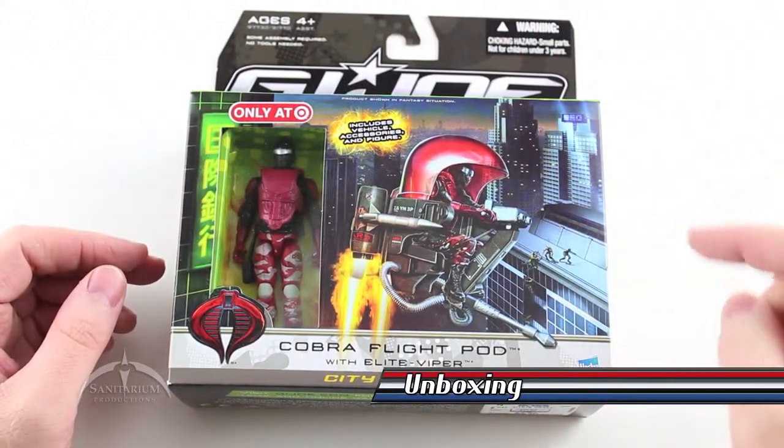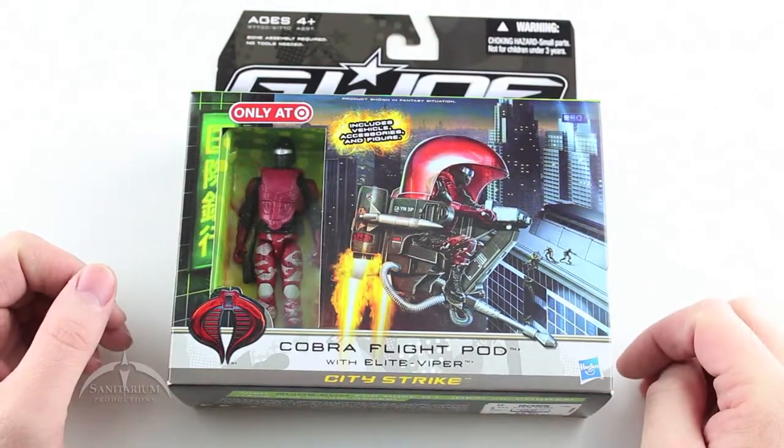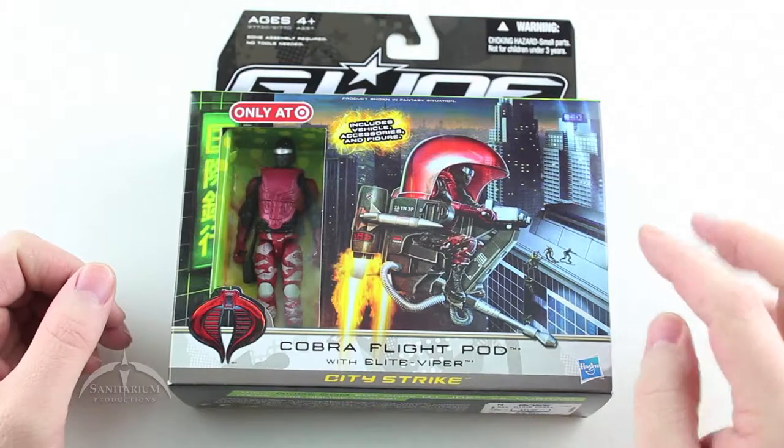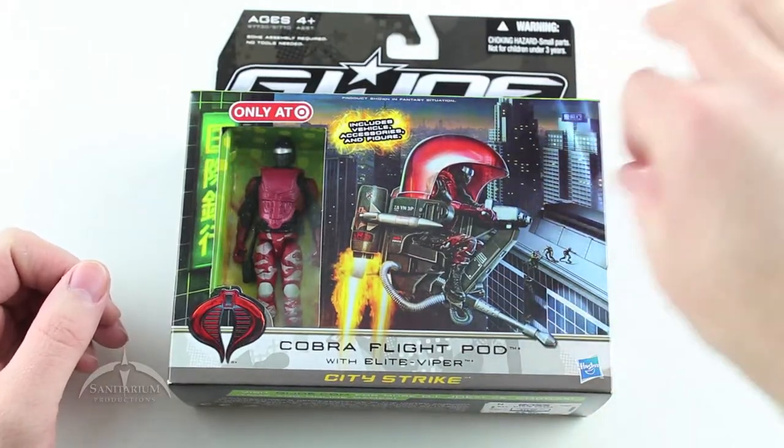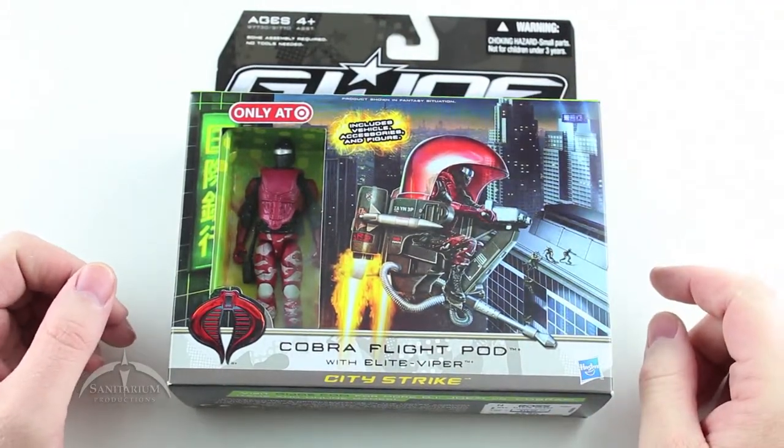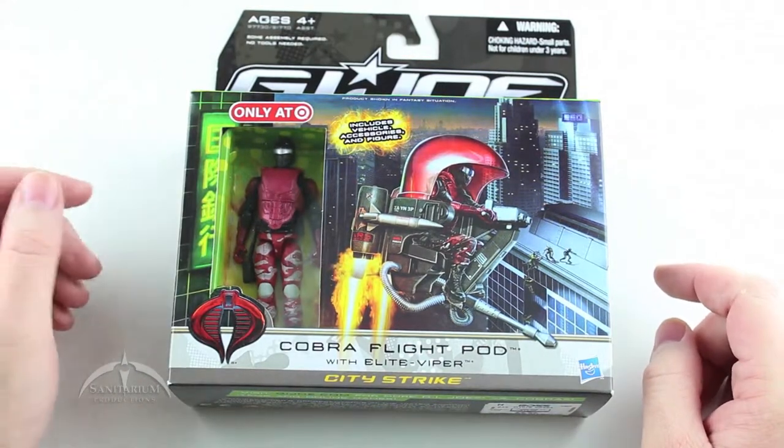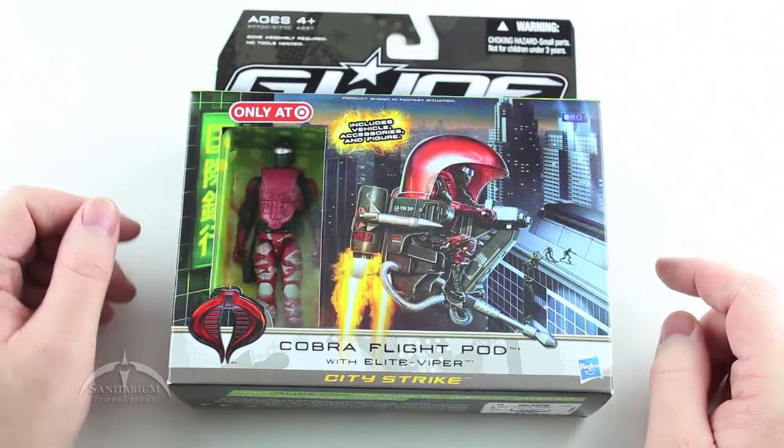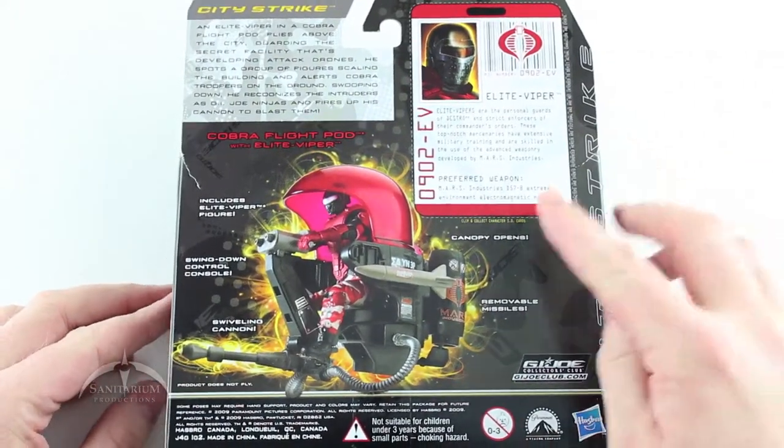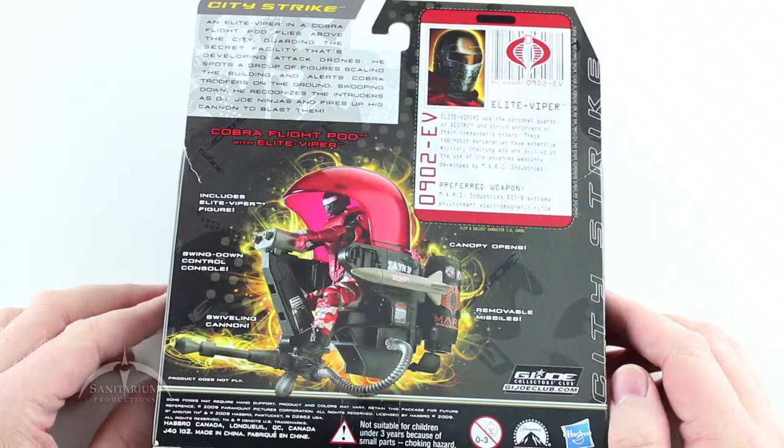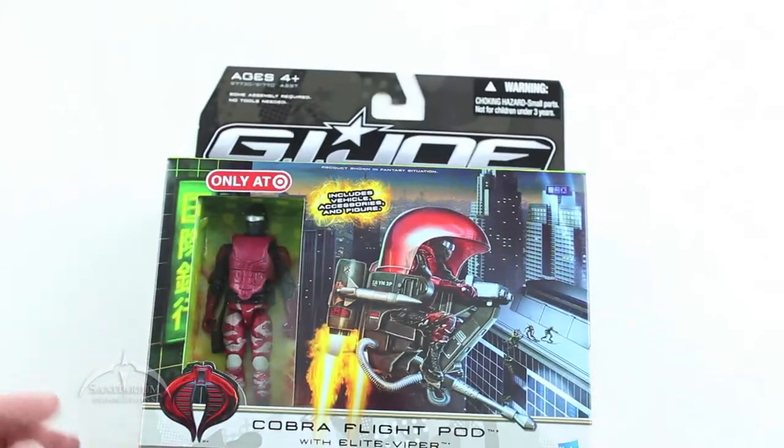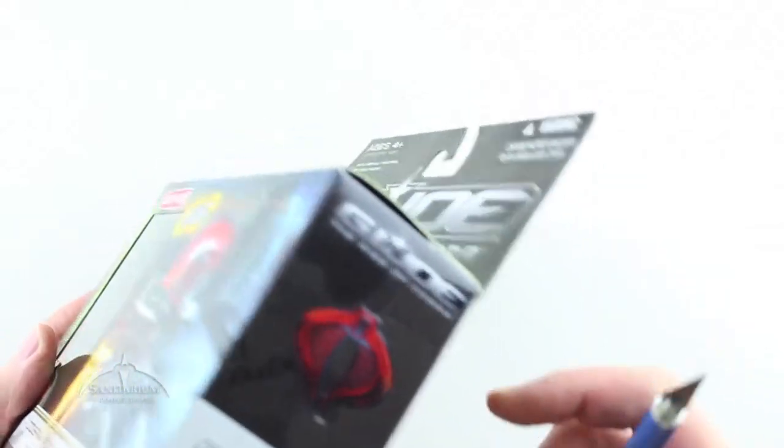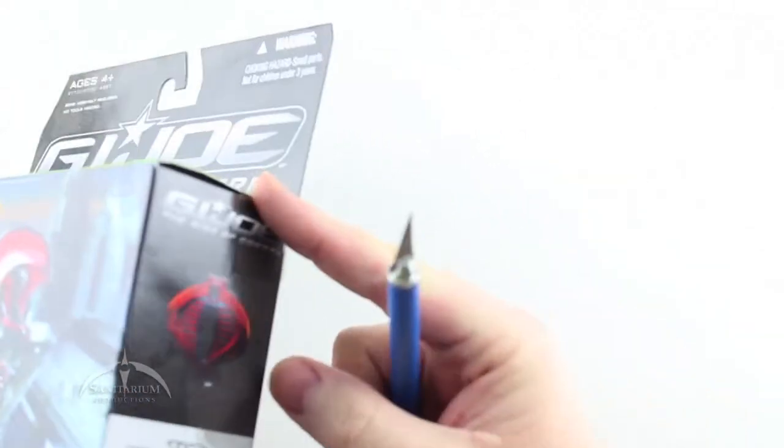Here's the package version of the Cobra Flight Pod with the Elite Viper. It's got some nice box art here with ninja guys sneaking around the building, really cool cityscape drawing and then the actual Flight Pod itself with the Target exclusive sticker and the file card.